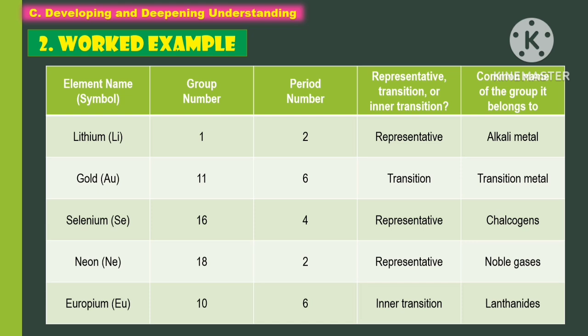The next element is gold. It has a group number of 1 and the period number of 6. It is transition and belongs to the transition metals. The third element is selenium. It has a group number of 16, period number of 4, and it is representative, belonging to the chalcogens.